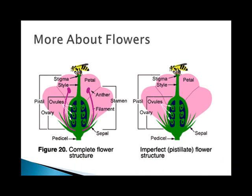There are a couple of different terms you need to know about flowers. Complete flowers have sepals, petals, stamens, and carpals — all four. An incomplete flower is missing one or more of those. A perfect flower contains both stamens and carpals. An imperfect flower is a unisexed flower — in other words, it's male or female. Monoecious plants produce only one type of flower per plant. Dioecious plants produce both types of flowers on one plant.